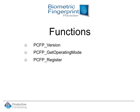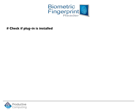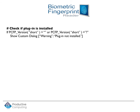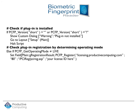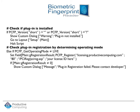Let's look at the script steps of a sample plug-in checker script. First, check if the plug-in is installed by calling the Version function — it will return empty results or a question mark if not installed. Show a custom dialog alerting the user, navigate back to the main setup layout, and halt the script. Next, check if the plug-in is properly registered by determining the operating mode. If GetOperatingMode does not equal 'live', call the Register function, hard-code the four parameters including your license ID, and register behind the scenes. If the registration result does not equal zero, display a dialog that plug-in registration failed.